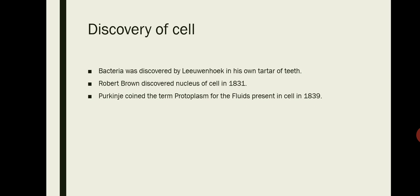Robert Brown discovered the nucleus of the cell in 1831. Robert Hooke is known for the discovery of cell, and Robert Brown is known for the discovery of nucleus of cell in 1831.